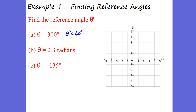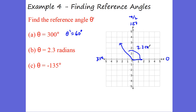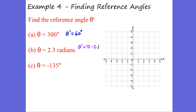Reference angles really help when evaluating trig functions. We have 2.3 radians. Remember, pi is about 3.14 and pi over 2 is about 1.57, so 2.3 radians puts us in quadrant 2, just past pi over 2. Since this equals pi radians over here, the reference angle would be pi minus 2.3, or 3.14 minus 2.3. That's all they're looking for.